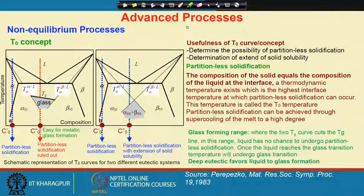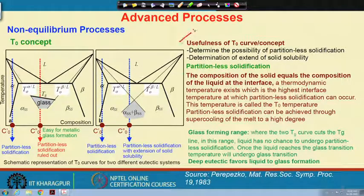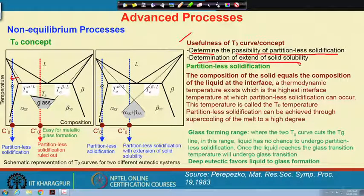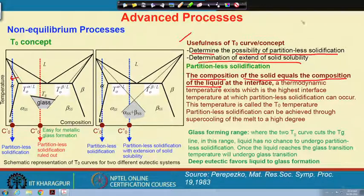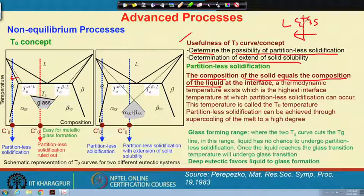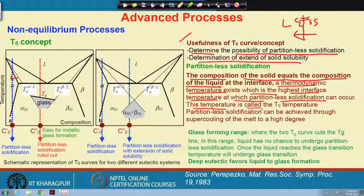The T naught concept assists in determining the possibility of partition-less solidification. The left-hand side of the T naught curve gives partition-less solidification and also assists extension of solid solubility. Partition-less solidification means the composition of the solid equals the composition of the liquid at the solid-liquid interface. The T naught temperature is the highest interface temperature at which partition-less solidification can occur.